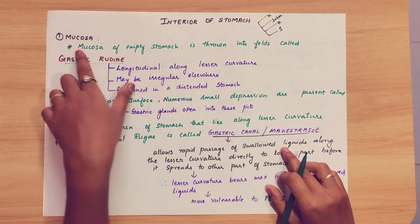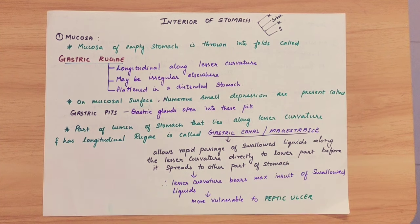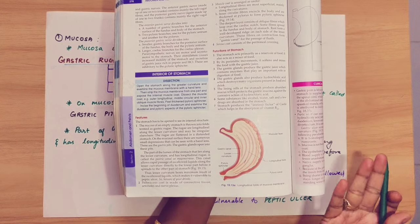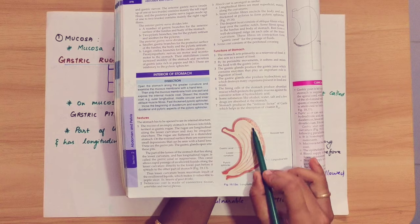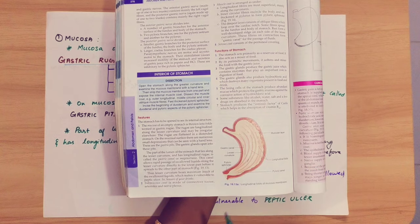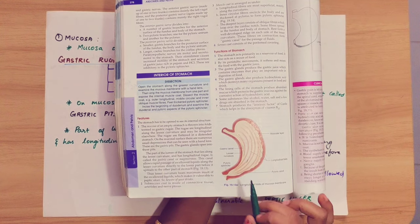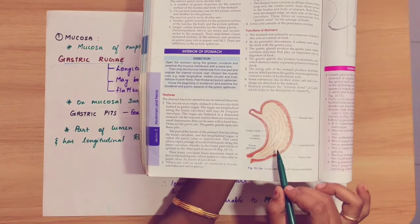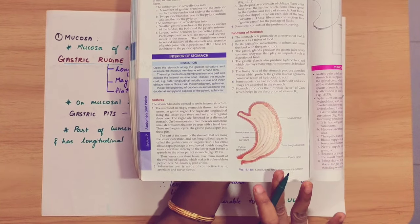The first layer is mucosa. The mucosa of an empty stomach is thrown into folds called gastric rugae. The stomach is cut and open. This is the longitudinal view. This is the gastric rugae, which is along the lesser curvature compared to other places of the stomach.